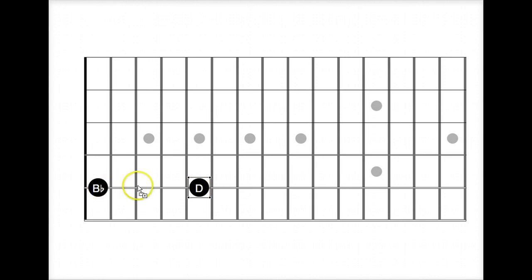So major third there, that's one, two, three, four half steps. A minor third above D will give us the fifth, which is the perfect fifth.